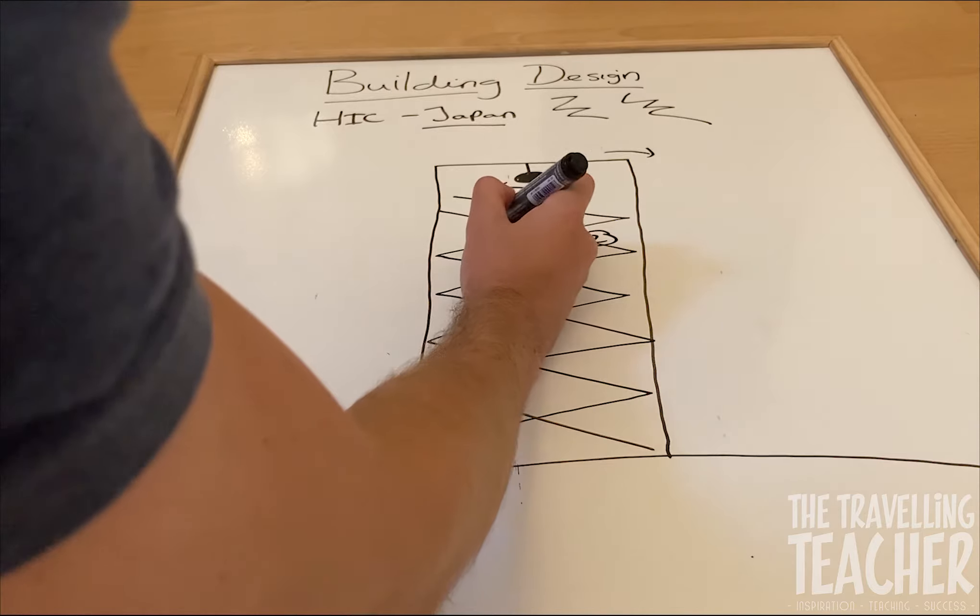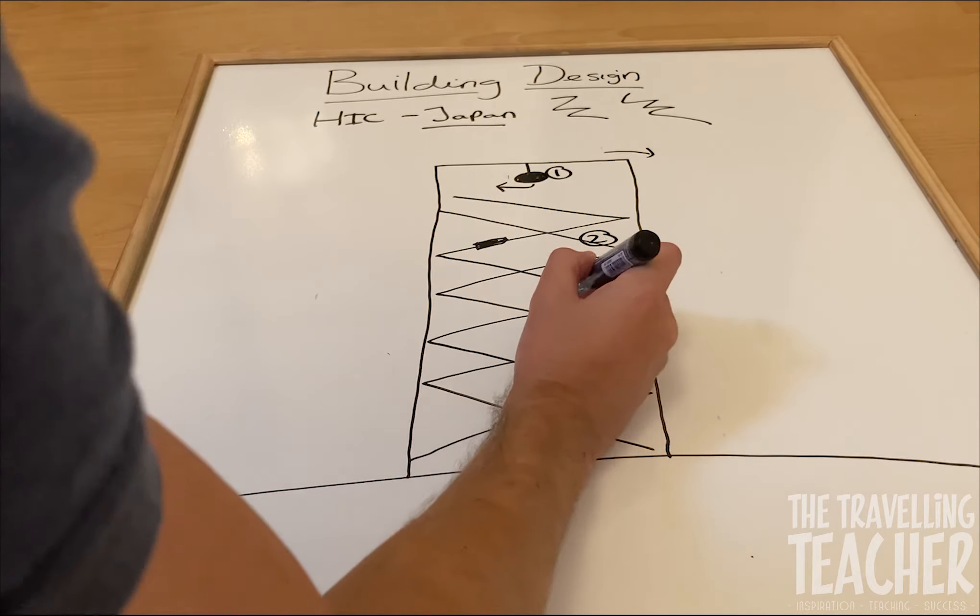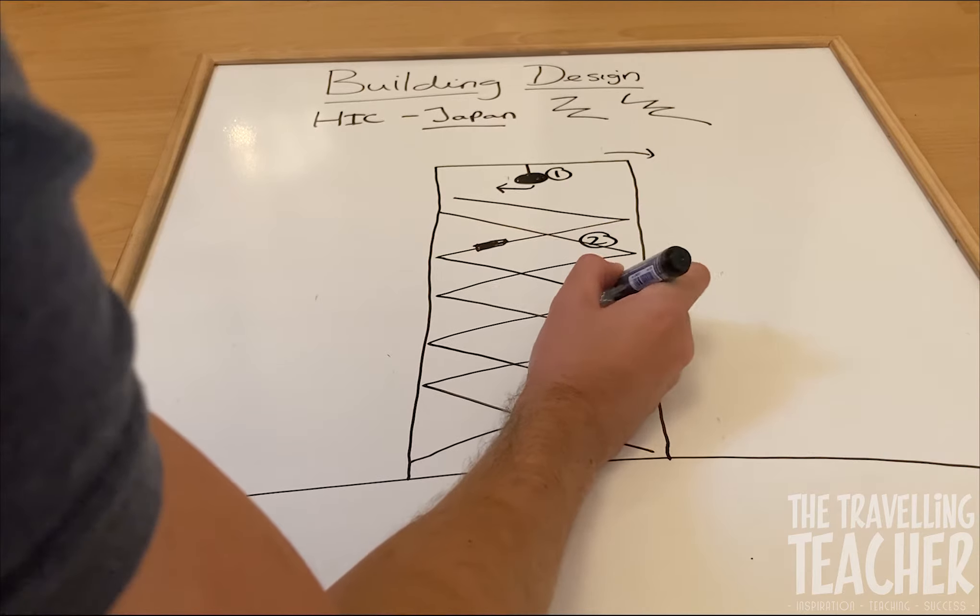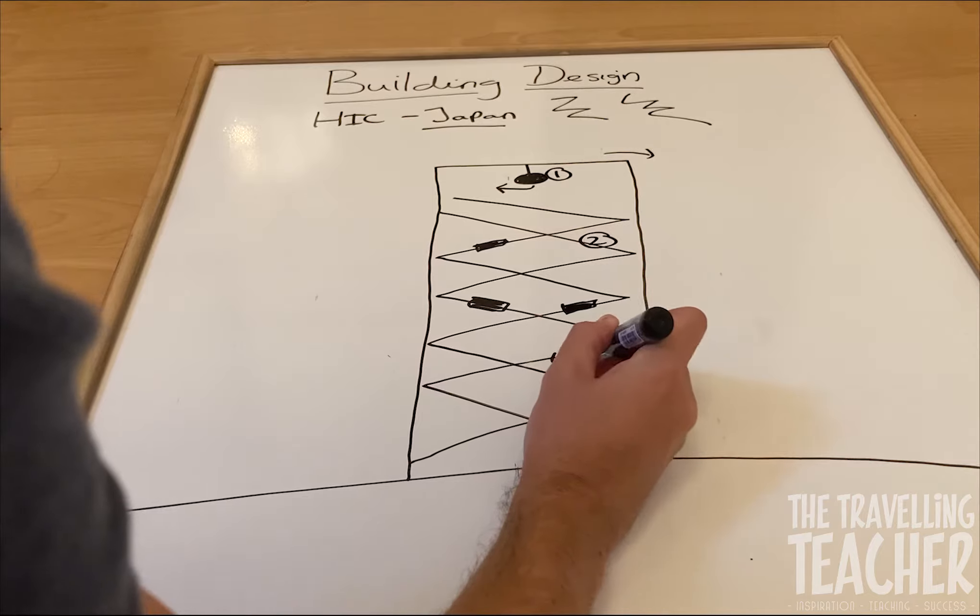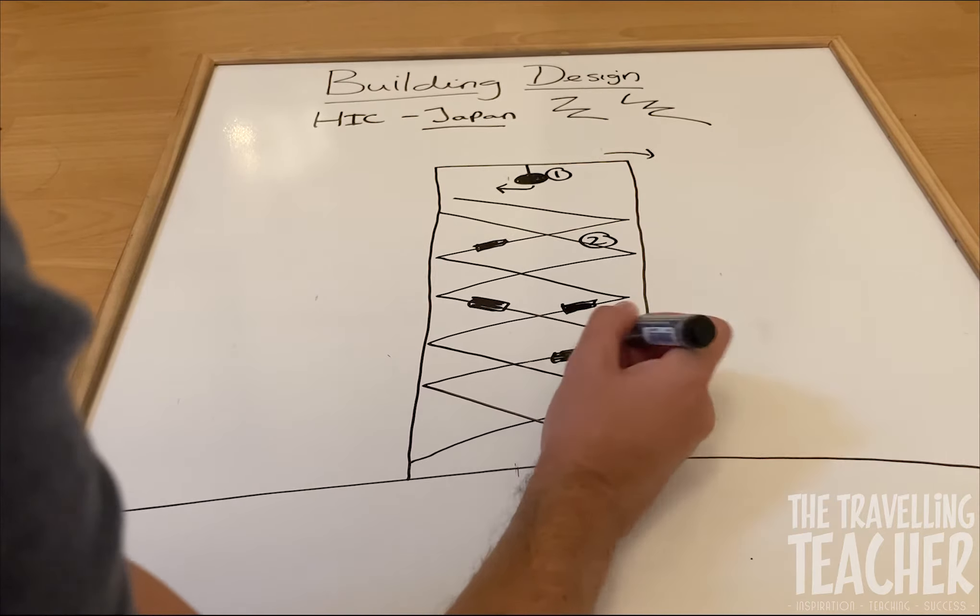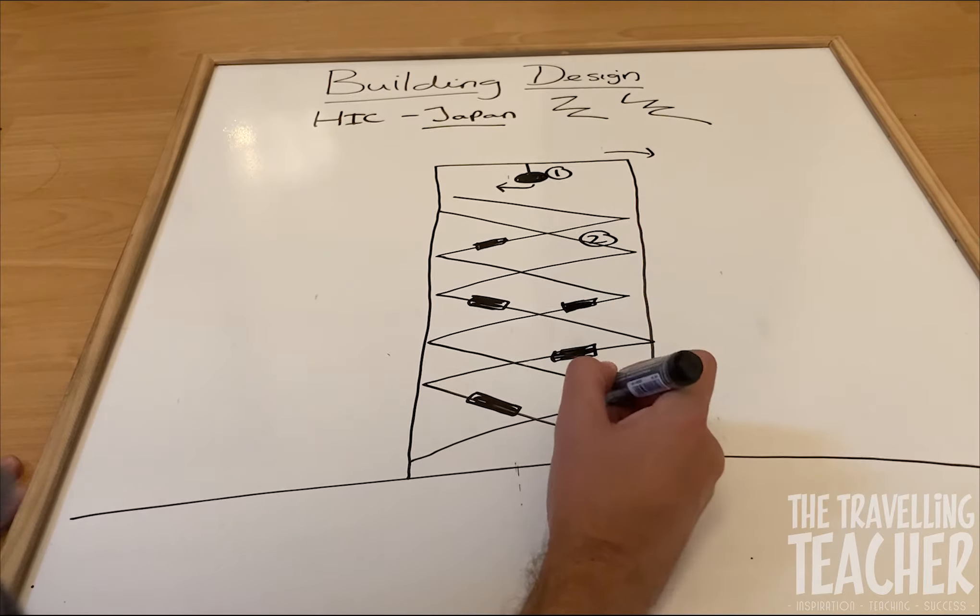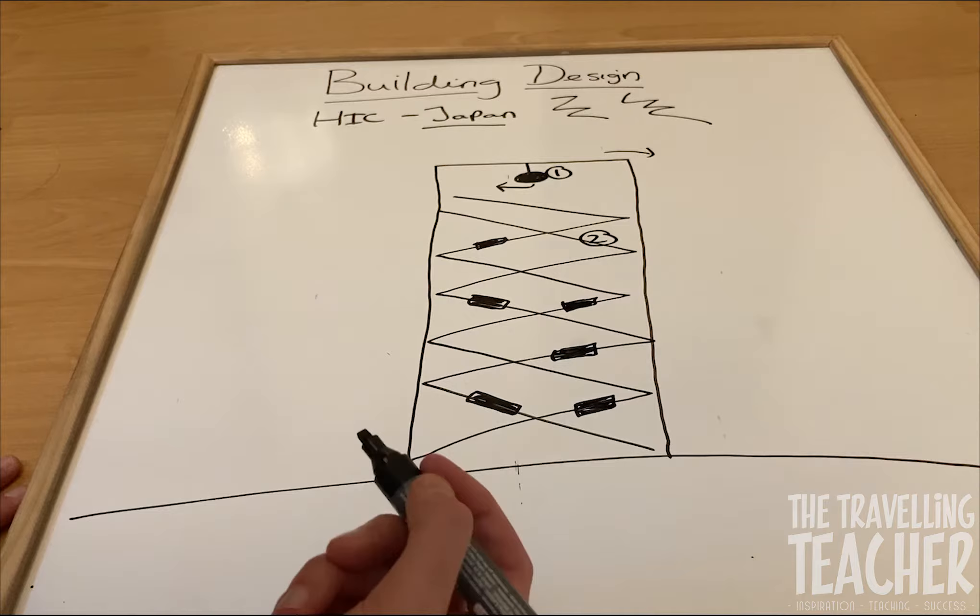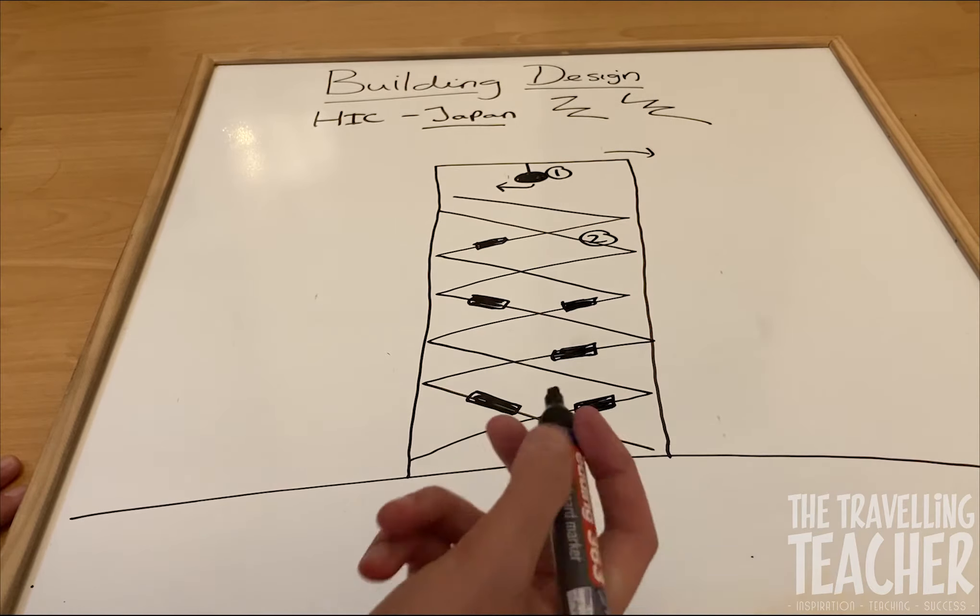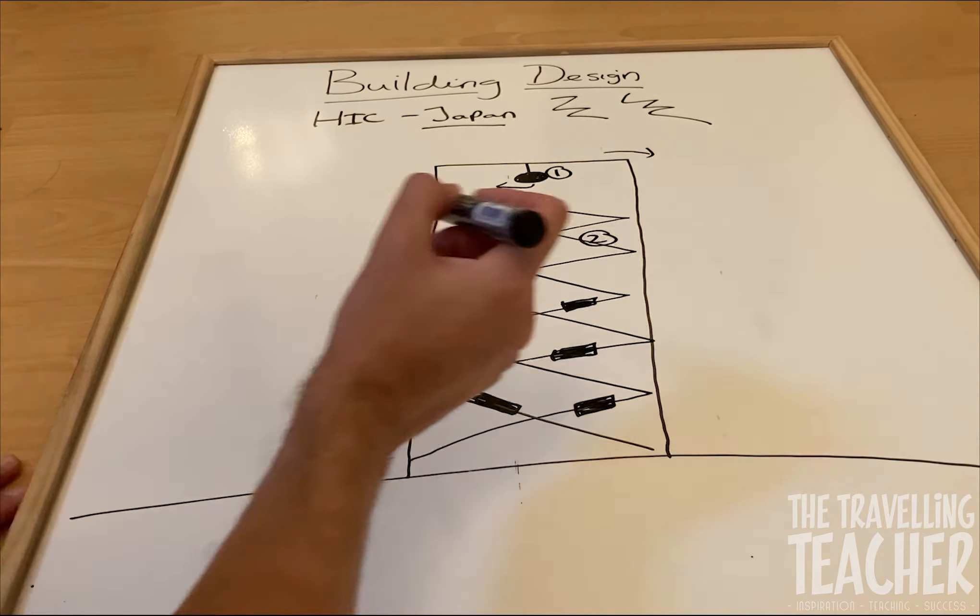And throughout this cross bracing, throughout the structure of a building, the building will have these shock absorbers. So obviously a shock absorber does exactly what it says on the tin. The shock absorber absorbs the energy from the actual earthquake itself. So number three, shock absorbers.